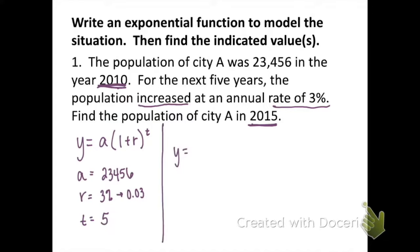Now I'm going to take those three values and just plug them into the equation. So we have y equals 23,456 times 1 plus 0.03 to the fifth power. Now take your calculators out and we're just going to plug that in to our calculator all at once and hit enter. If you're having trouble putting this in your calculator, please pause your video and ask a teacher for help. Rounding to the nearest whole person, we get that the population in 2015 is going to be 27,192 people.